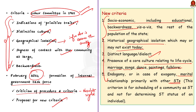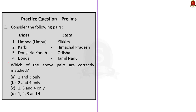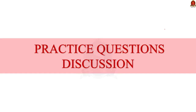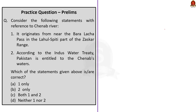That concludes the scheduled tribes article discussion, in which we saw the constitutional article that deems a particular tribe as a scheduled tribe, the current procedure for inclusion, the criteria set out by the Lokur Committee, and finally the criteria proposed by the internal task force. Now let us move on to the practice prelims question discussion. Today, we have four prelims questions — I will solve three of them and one is a quiz question for you.